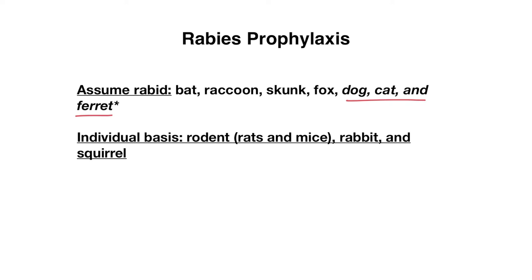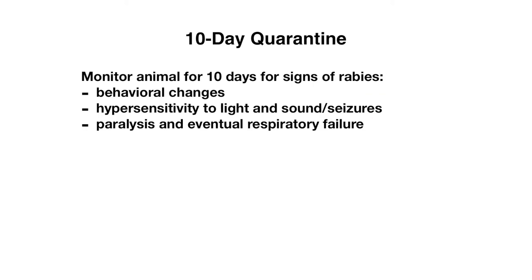Animal bites you would consider more on an individual basis also include rodents like rats and mice, rabbits, and squirrels, as these animals are less likely to transmit rabies. Previously we mentioned quarantining an animal — so what does that actually mean? There is such a thing as a 10-day quarantine, which involves monitoring an animal that has bitten a human for 10 days for any signs of rabies.